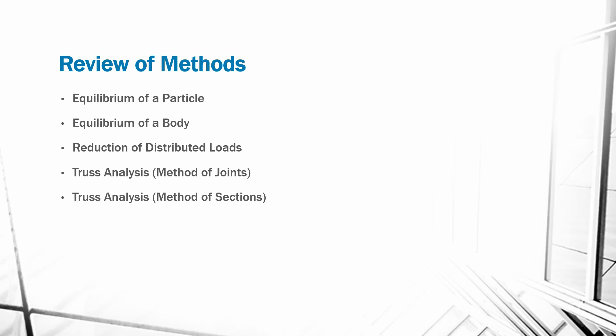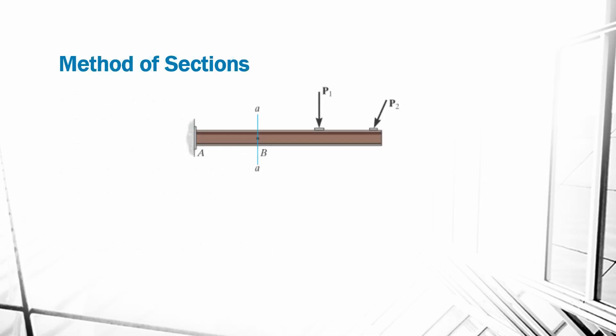Today we will learn how to calculate internal forces using the method of sections. Let's start by considering the cantilever beam shown in the image. Forces P1 and P2 act on the beam. If we want to find the forces at point B, we can start by determining the reactions at A.